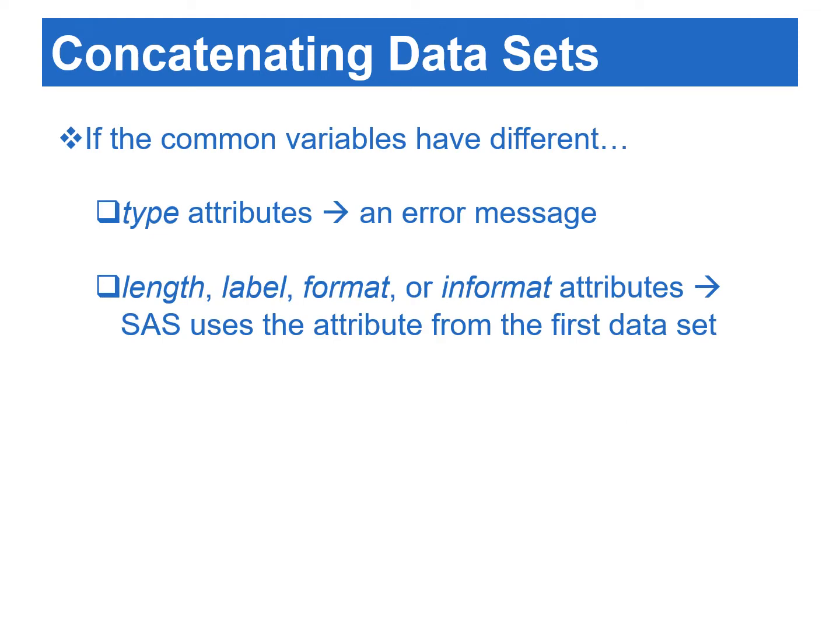The information about truncation is also shown in the SAS log. When common variables have different length, label, format, or informat attributes, SAS will use the attributes of this common variable from the first data set and issue a warning message in the log. If common variables from different input data sets have a different data type, SAS will stop processing and issue an error message in the log.